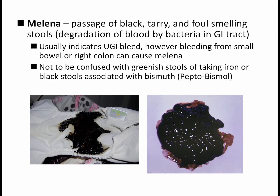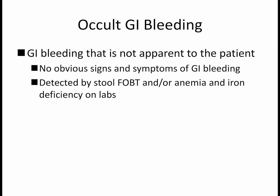Here are some pictures of melena — very black with a tarry, sticky consistency. We also have occult GI bleeding, which is not apparent to the patient with no obvious signs or symptoms; it's usually detected by stool FOBT and/or anemia and iron deficiency on labs. Finally, hematochezia is bright red blood per rectum, usually indicating a lower GI bleed in the colon. However, in patients with very brisk upper GI bleeding, it can also present as hematochezia.